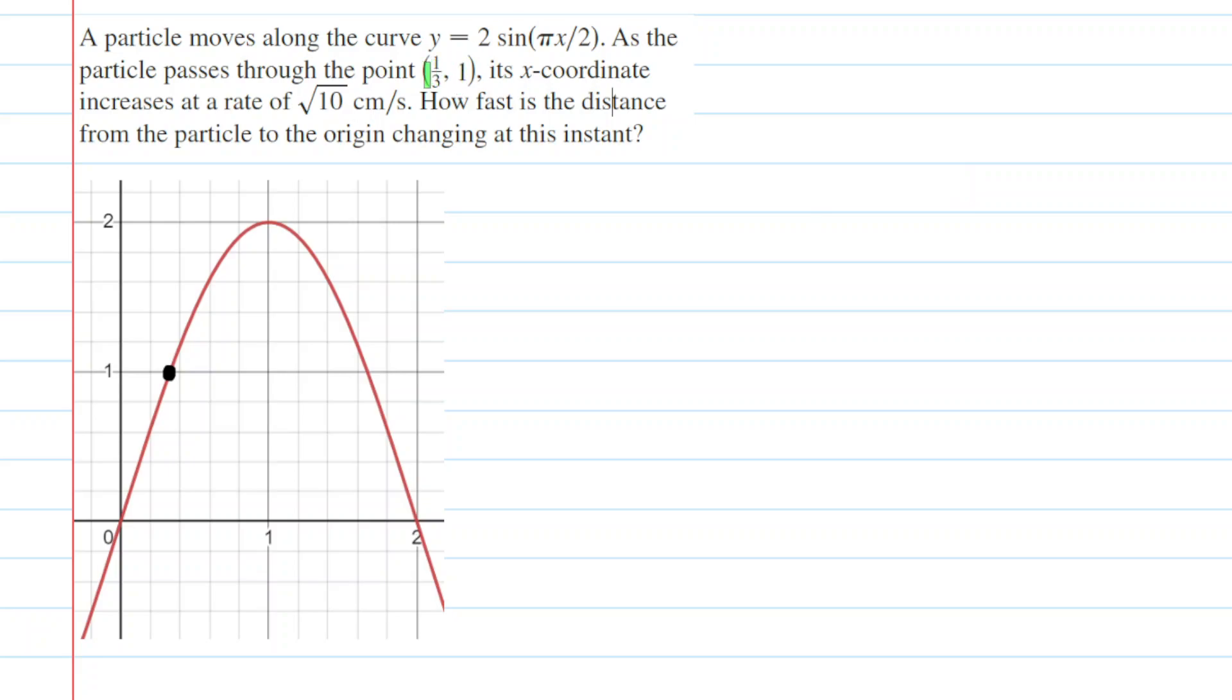Next, we consider a point on that equation, or on the graph of that equation, and that point is located at 1/3, 1. Now, the question asks us to determine the rate of change in the distance from the particle to the origin, and what that rate of change actually is at a particular instant.